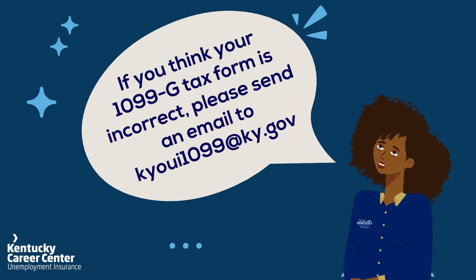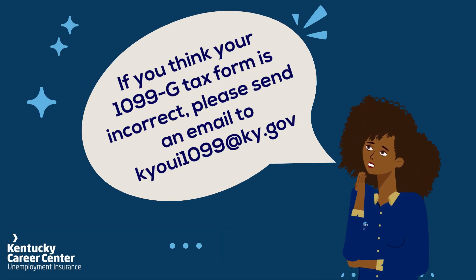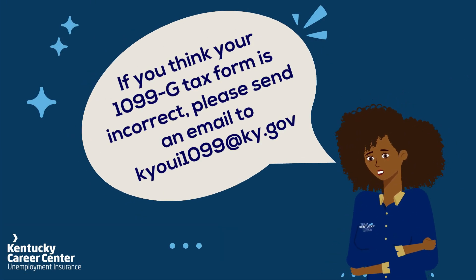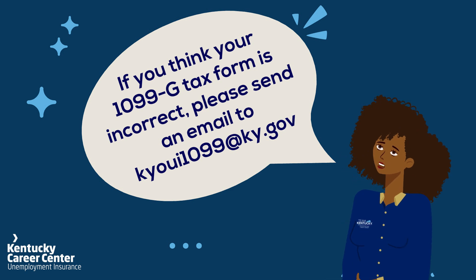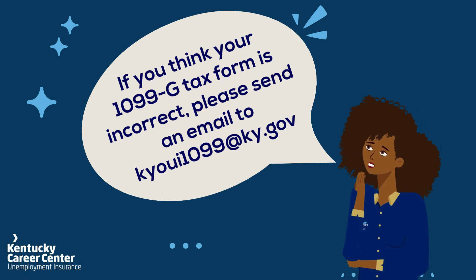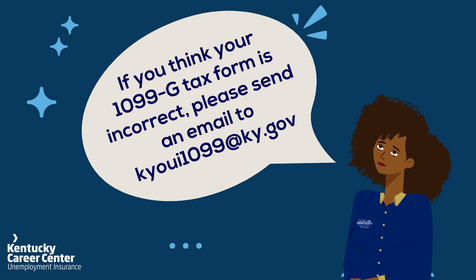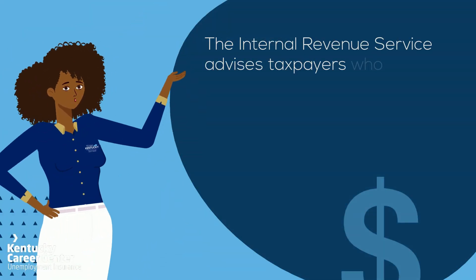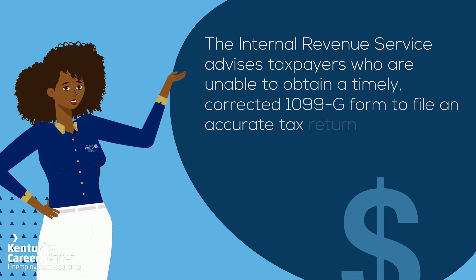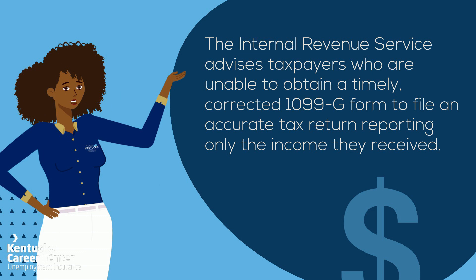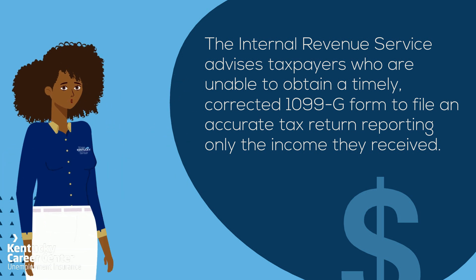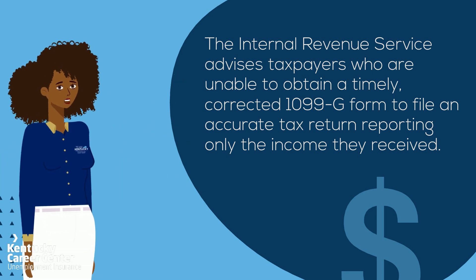If you think your 1099-G tax form is incorrect, please send an email to kyoui1099@ky.gov. The Internal Revenue Service advises taxpayers who are unable to obtain a timely, corrected 1099-G form to file an accurate tax return reporting only the income they received.